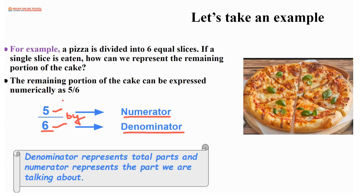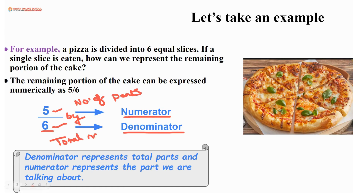How do you decide which number goes on top and which goes on the bottom? The number of parts you are talking about — that's the numerator. The total number of parts is written below — that's the denominator. So: number of parts we are talking about equals numerator; total number of parts equals denominator.